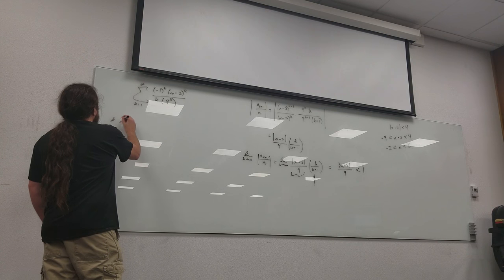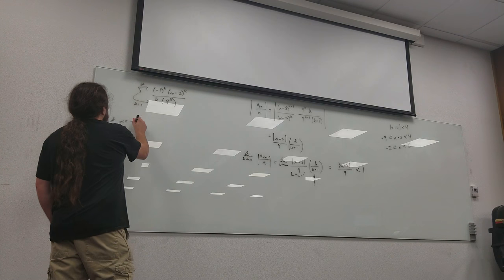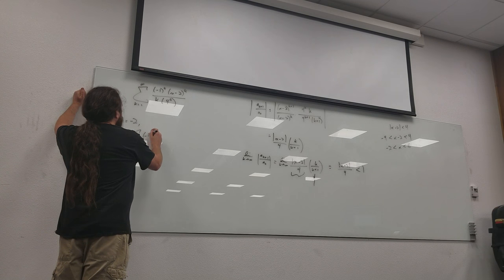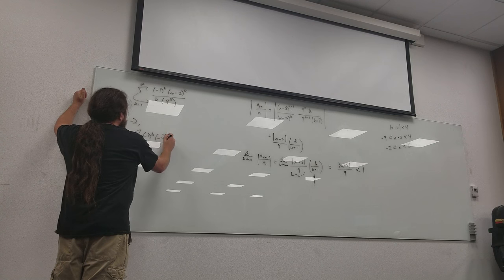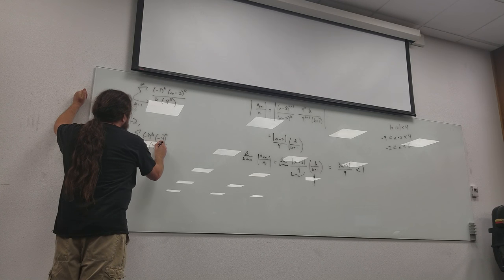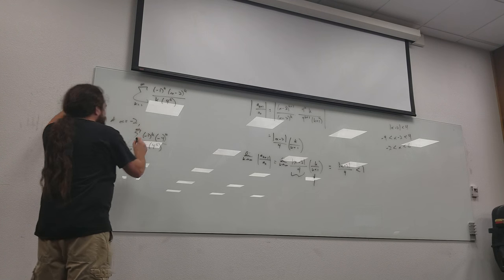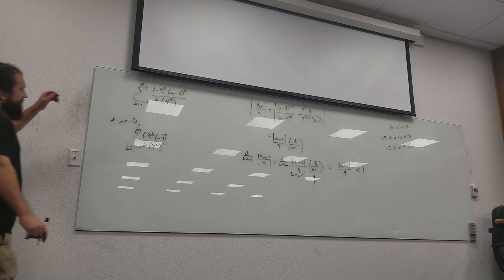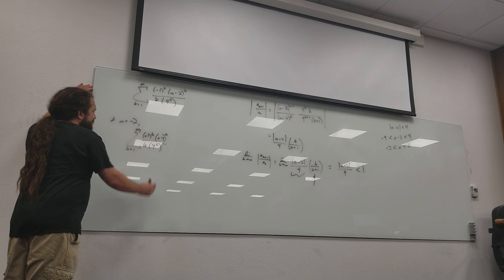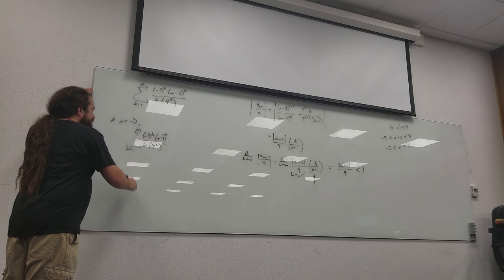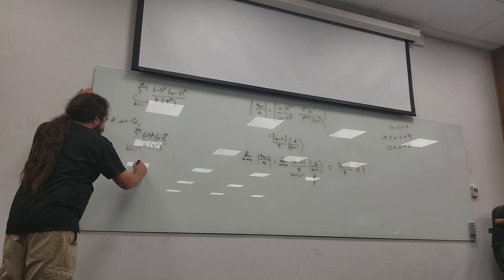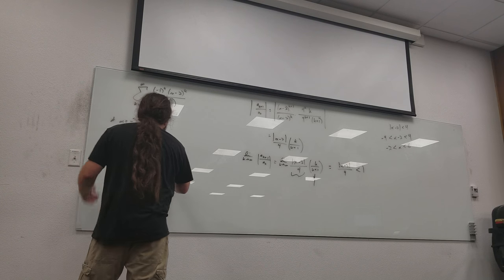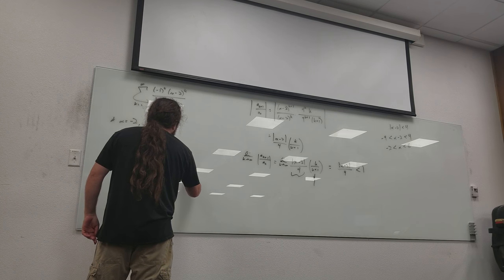So, if I plug in x equals negative 2, what my series looks like is negative 1 to the k times negative 4 to the k over k times 4 to the k. This goes from 1 to infinity. So, what happens with the two things on the top? It becomes 4 to the k. Yeah, you see where your negatives cancel out? It's like an even number of negatives. That doesn't matter. So, what I've got is really just 4 to the k over 4 to the k. So, what series is this? The harmonic series. It is a harmonic series. So, this diverges because it's the harmonic series.